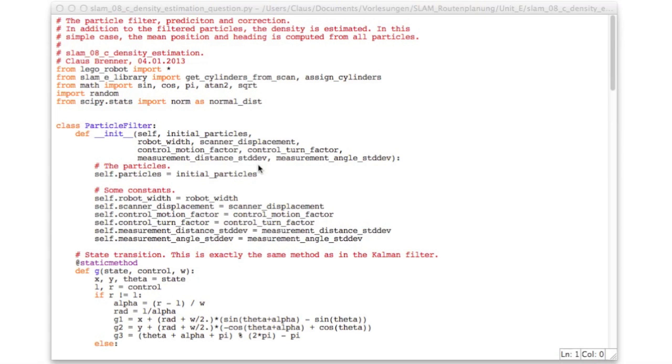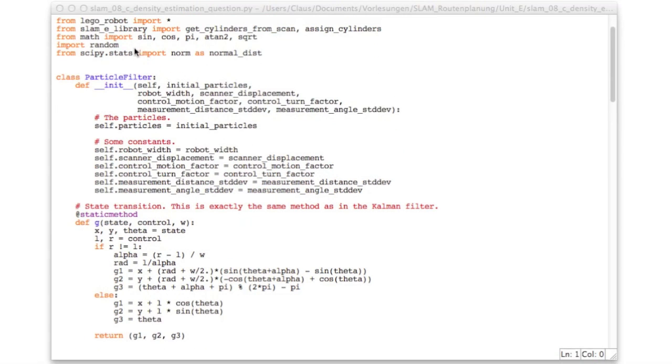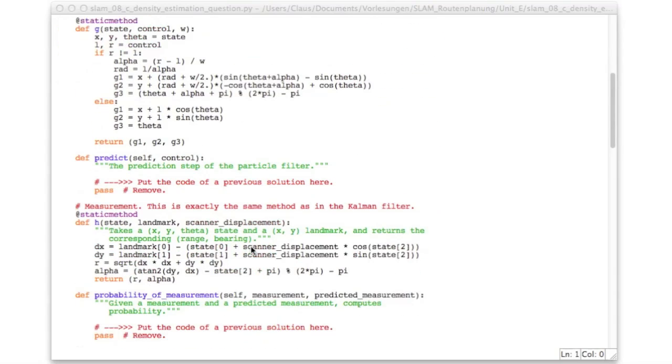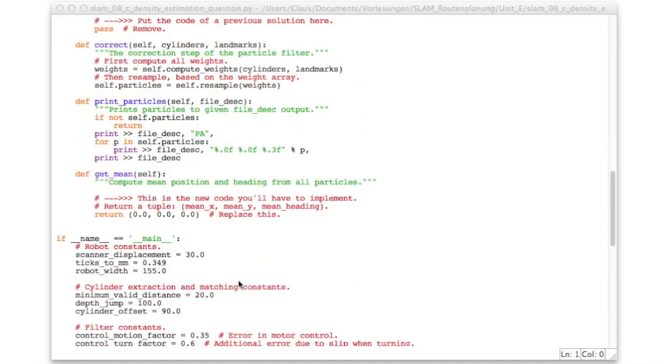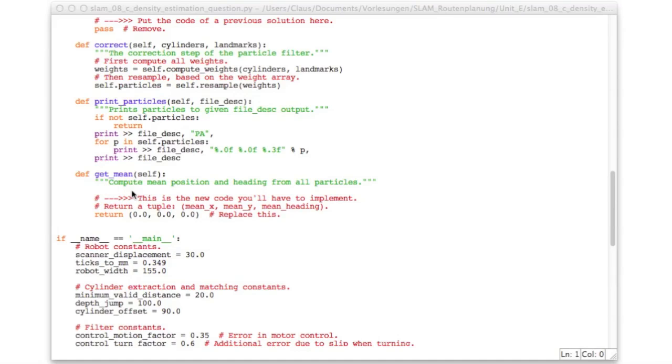Now let's program this. And here's some code I prepared. The density estimation question. And it is a really small programming assignment. So up here, just put in the prediction code and the probability of measurement, the compute weights, and the resample code you did earlier.